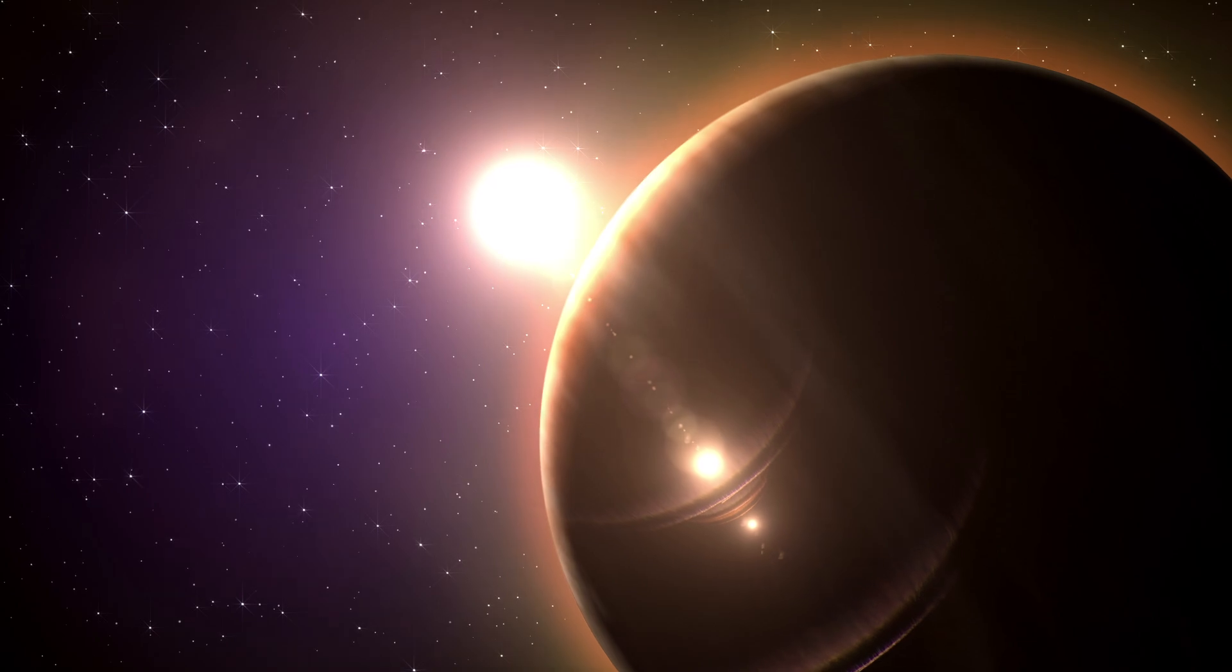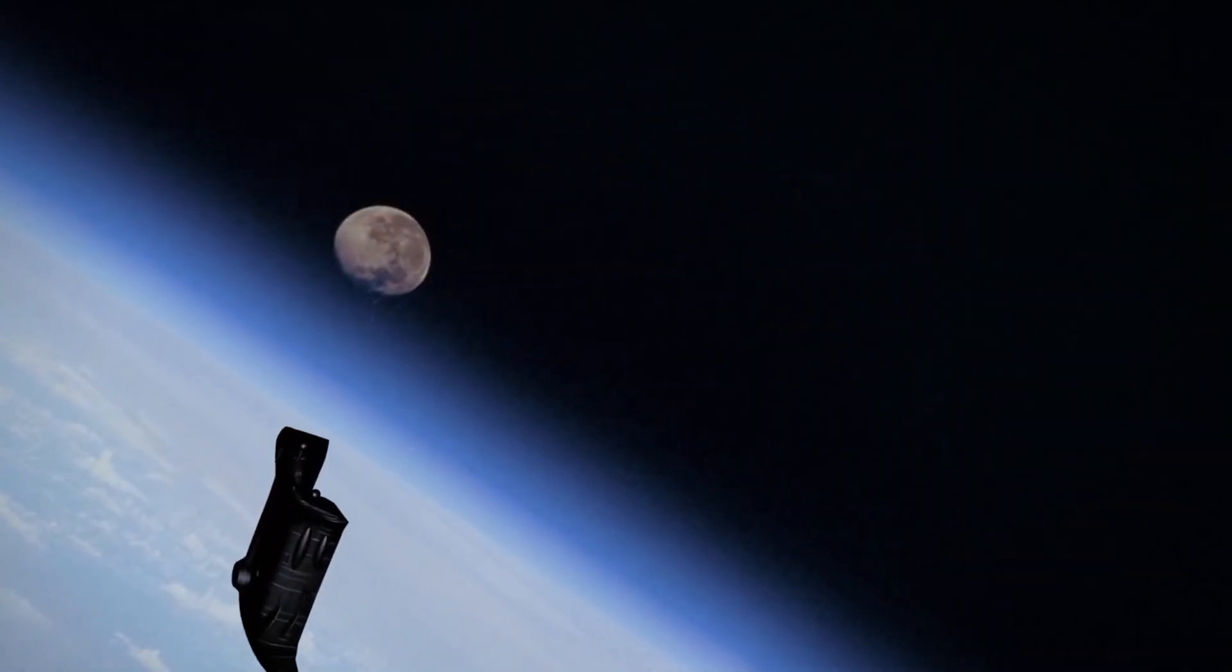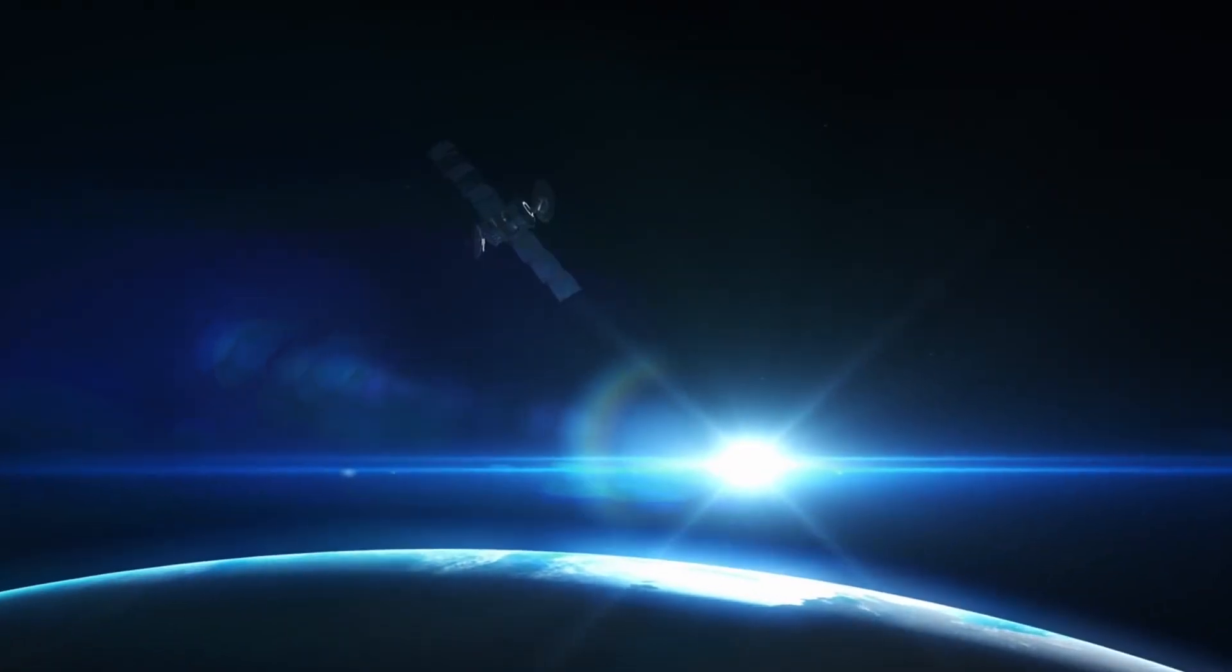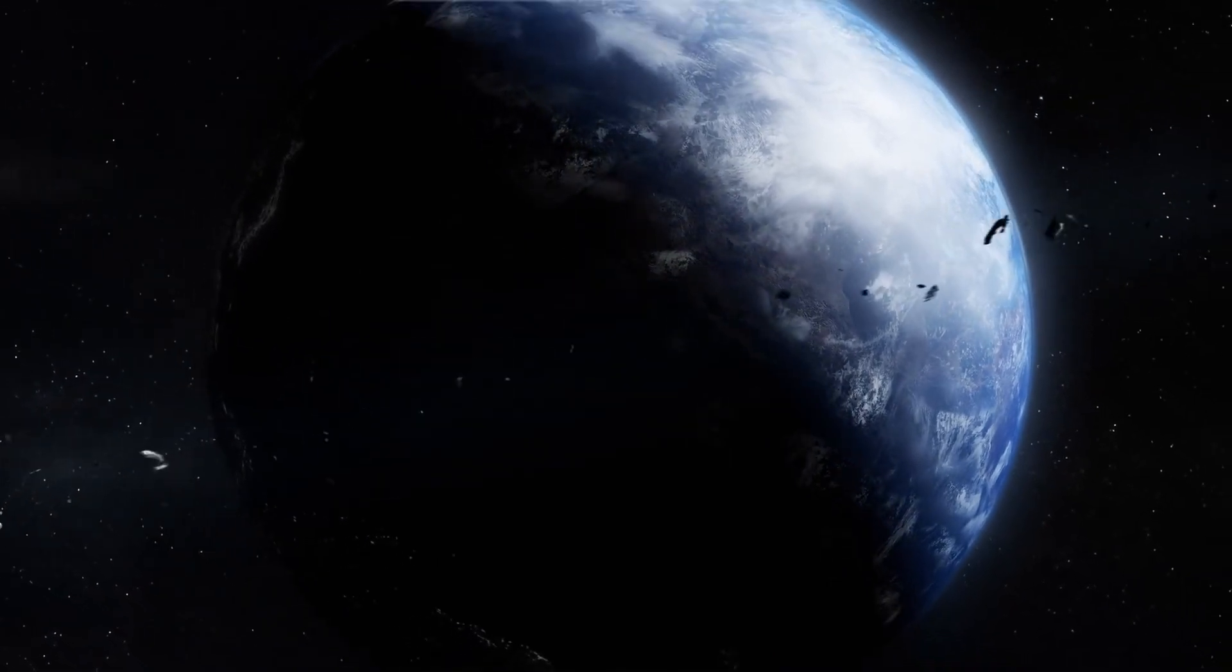The planet orbits around Proxima Centauri, which happens to be the closest star to the Sun, and since it sits in the habitable zone of this star, scientists speculate it could be home to microscopic or even intelligent life.